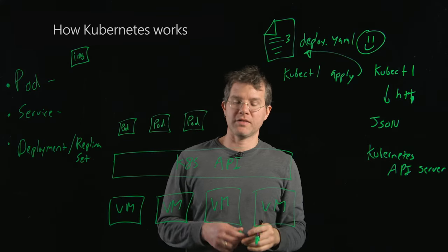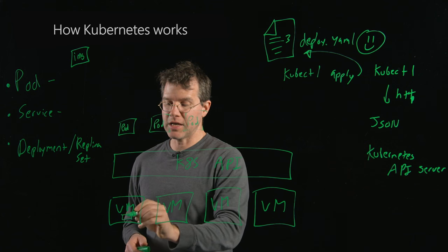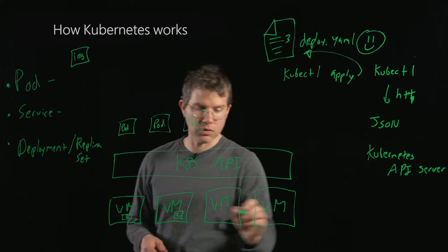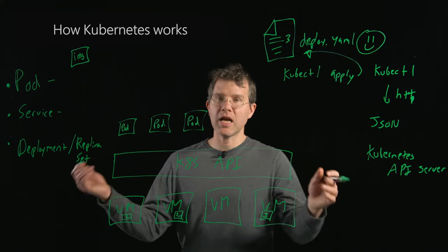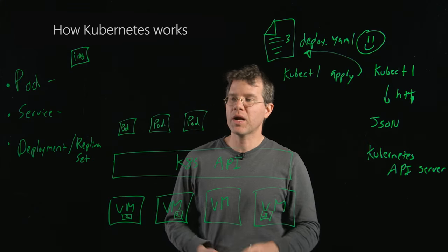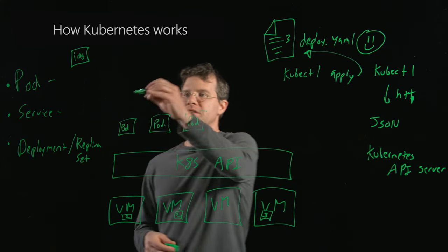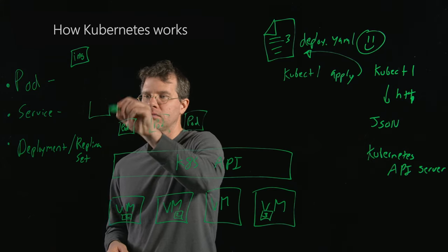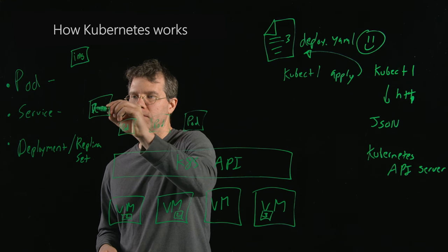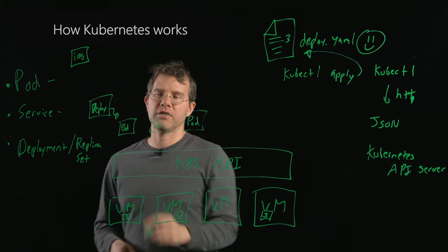In the Kubernetes API, this will result in the scheduler placing one, two, three containers on the virtual machines that actually act as the host machines for the service. There is a deployment object that is managing and ensuring that there are three of these replicas.